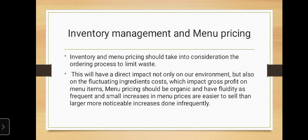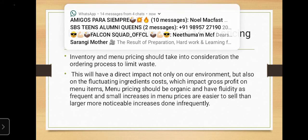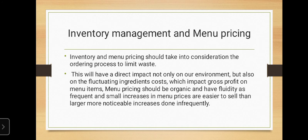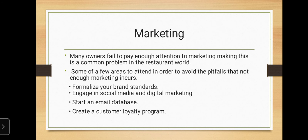Inventory management and menu pricing should take into consideration the ordering process to limit waste. This will have a direct impact not only on the environment but also on fluctuating ingredient costs, which impact gross profit on menu items. Menu pricing should be organic and have fluidity, as frequent small increases in menu prices are easier to sell than larger, more noticeable increases done infrequently.